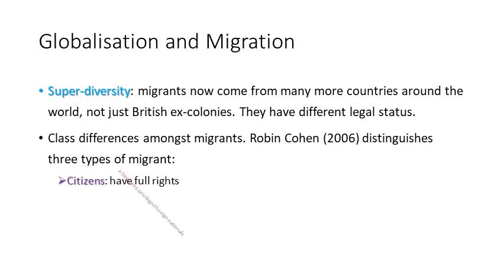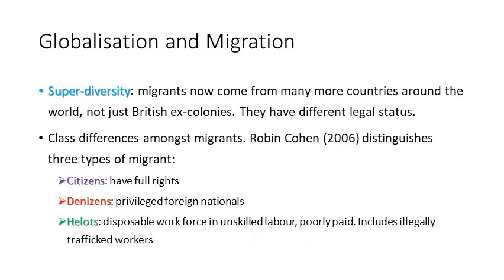This has now led to what many are referring to as super-diversity. This is to say that migrants now come from many more countries around the world — not just, in the UK's example, British ex-colonies. As a result, they have different legal statuses. Today, migrants are coming from all over the world, from all different countries, for all different reasons.